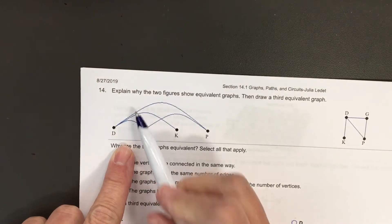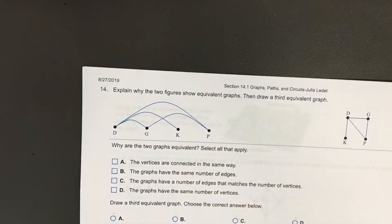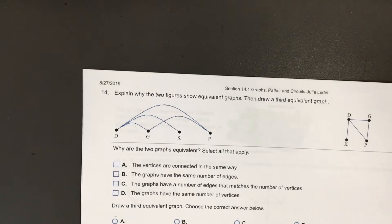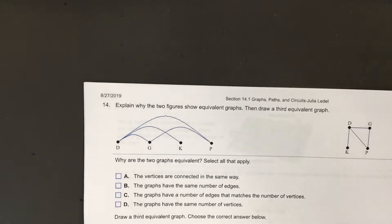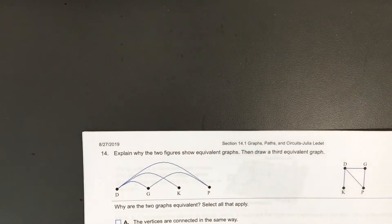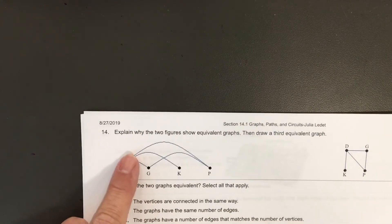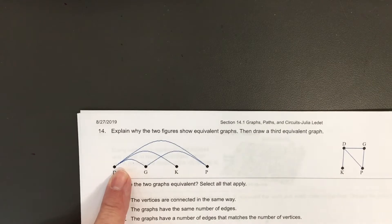These edges look like they merge before they get to vertex D. The same for vertex P. That's not what's going on in this graph. They don't really merge. They're not supposed to.